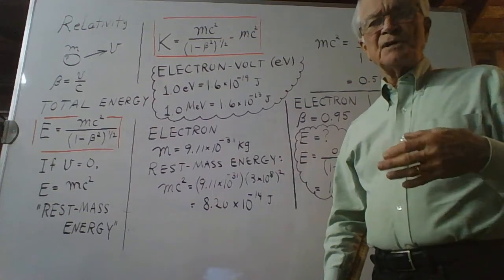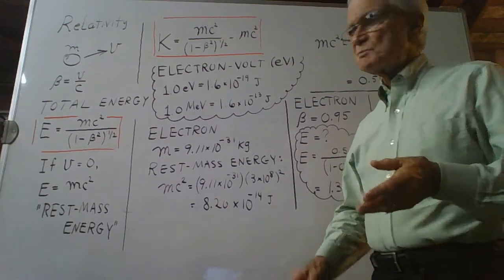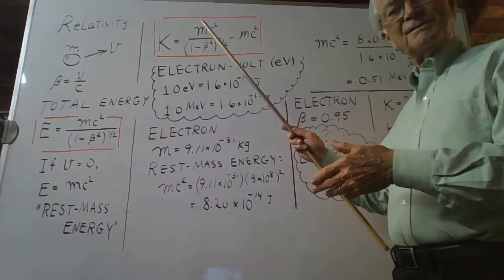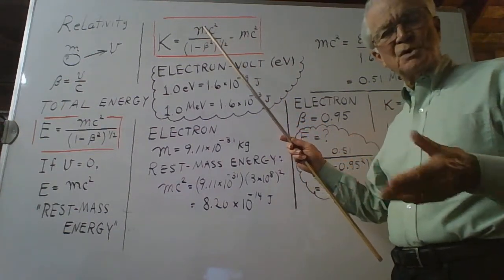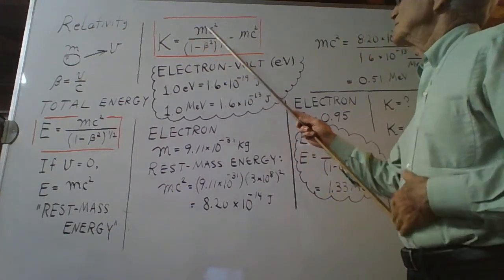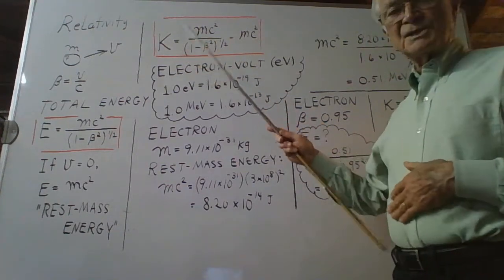Any energy above and beyond the rest mass energy mc squared is part of the energy having to do with motion, so it's the kinetic energy. So this difference is the kinetic energy symbolized as k.